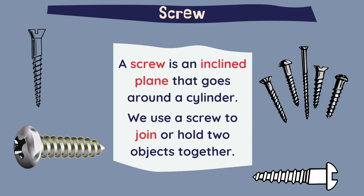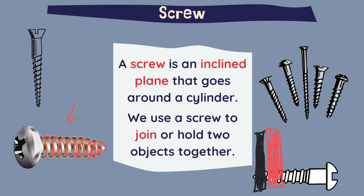A screw is an inclined plane that goes around a cylinder. If we look at this screw, we can see that this inclined plane goes around and around the cylinder of the screw, and we use this to join or hold two objects together. For example, we can have two pieces of wood, one here and the other one here, and if we put the screw in, they will join and hold together.